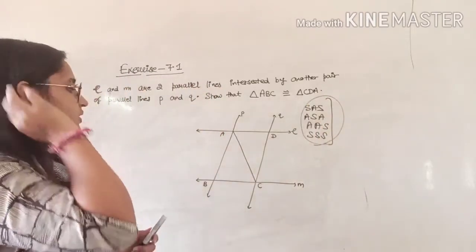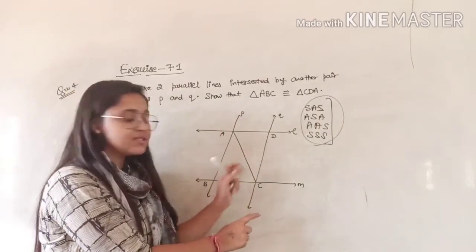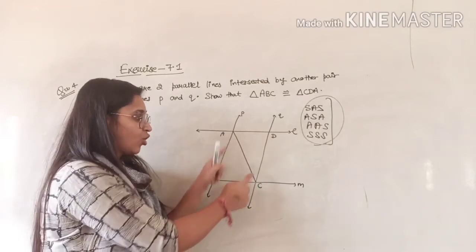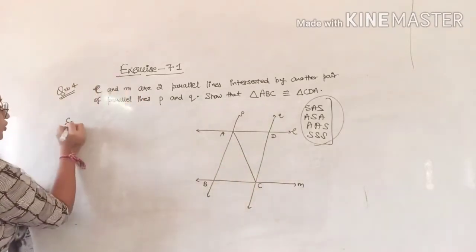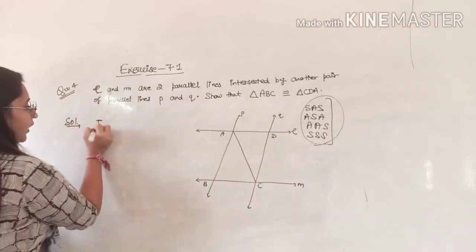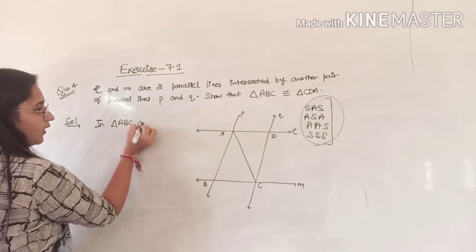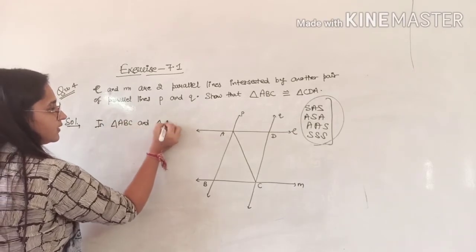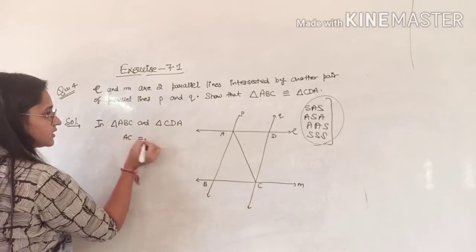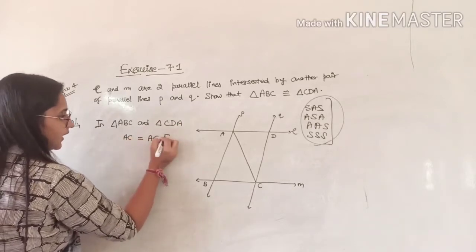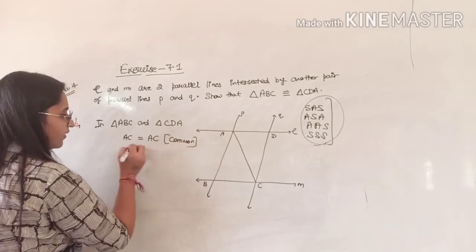Now first of all, in both of the triangles, AC is the common side. So in triangle ABC and triangle CDA, AC is equal to AC — that is common.